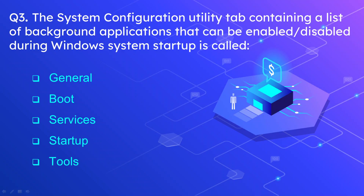Question number 3: The system configuration utility tab containing a list of background applications that can be enabled and disabled during Windows startup is called? The options are General, Boot, Services, Startup, and Tools. The correct option is Services.